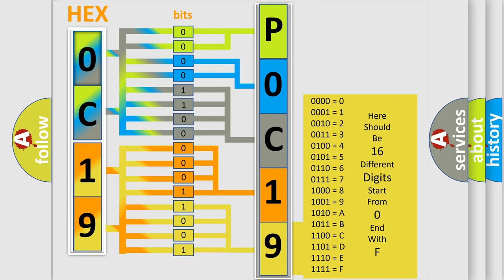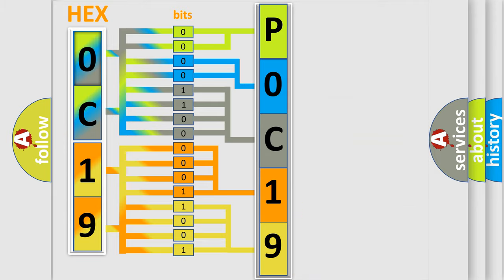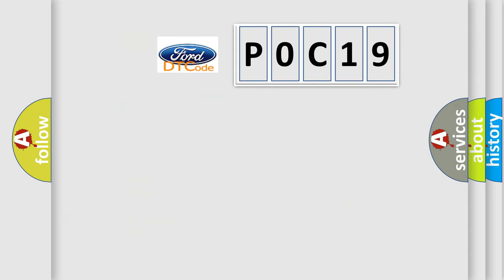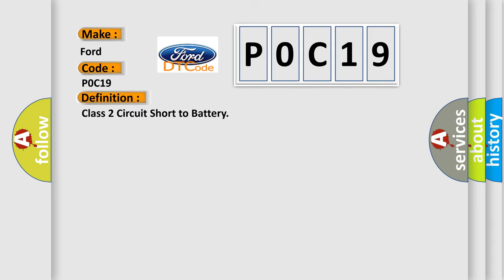We now know in what way the diagnostic tool translates the received information into a more comprehensible format. The number itself does not make sense to us if we cannot assign information about what it actually expresses. So, what does the diagnostic trouble code P0C19 interpret specifically? The basic definition is: Class 2 circuit short to battery.